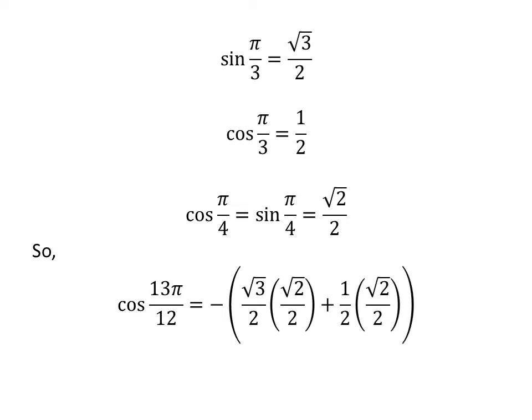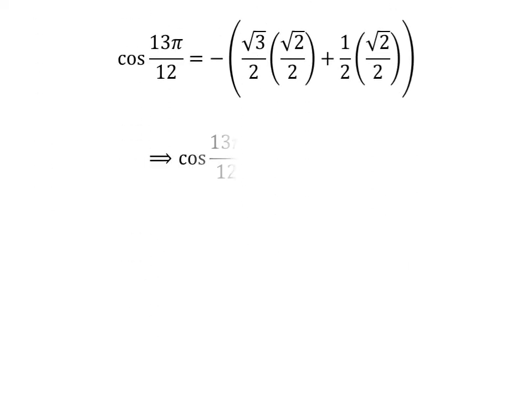We get cosine of 13 times pi upon 12 is equal to minus of square root of 3 upon 2 times square root of 2 upon 2 plus half times square root of 2 upon 2. Straight multiplication gives us cosine of 13 times pi upon 12 is equal to minus of square root of 6 upon 4 plus square root of 2 upon 4.